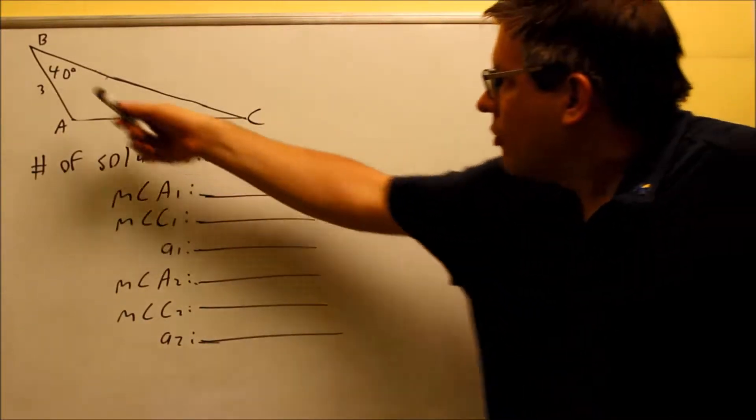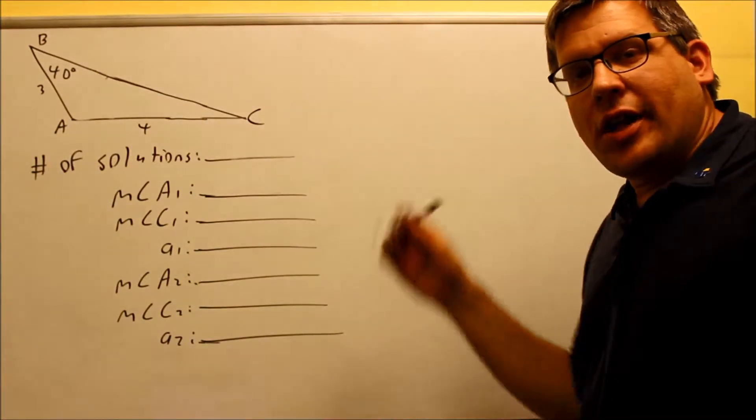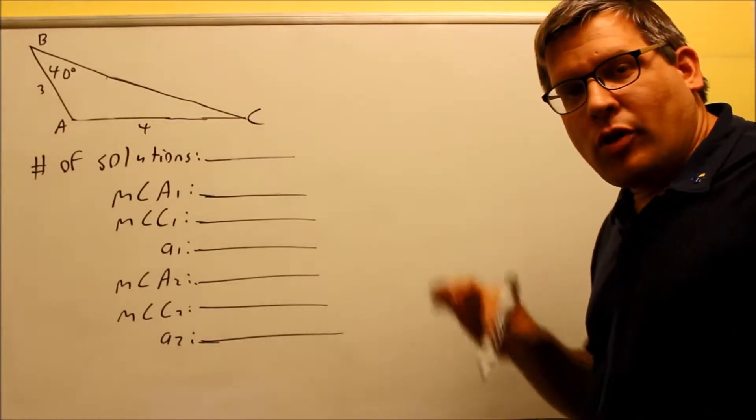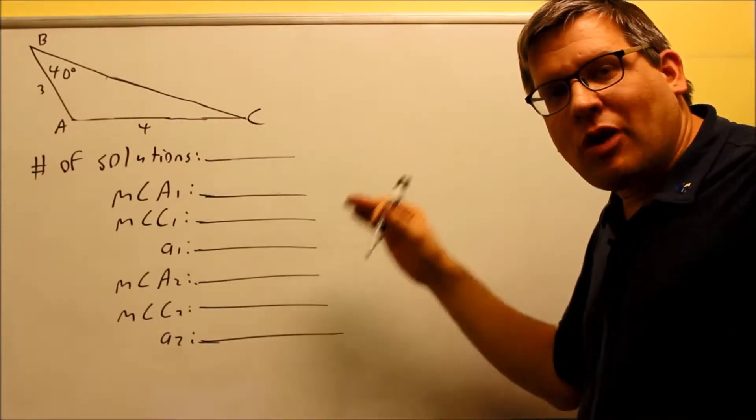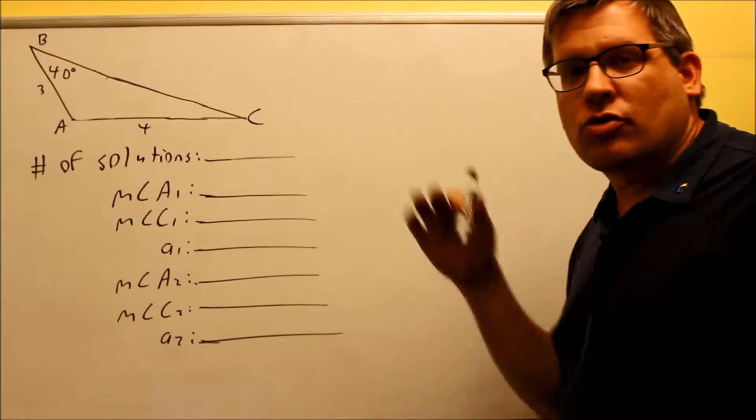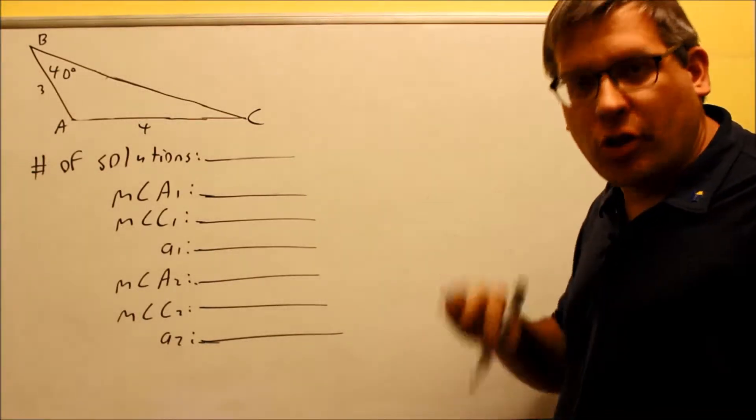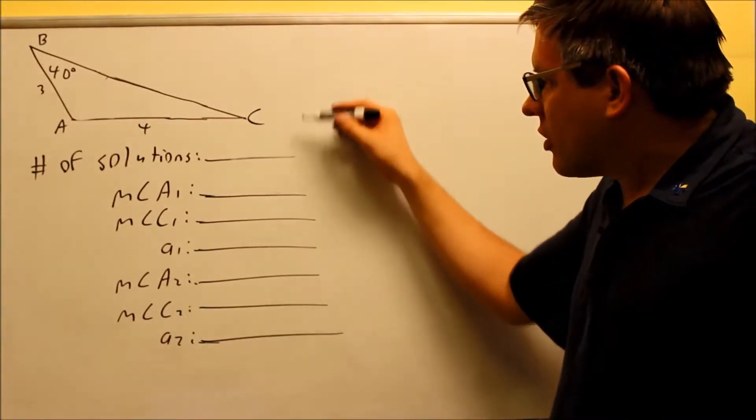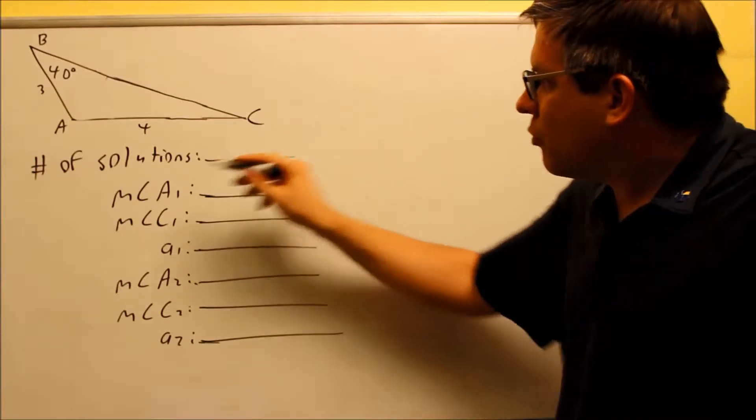Okay, we're going to do another problem where we have two sides and a given angle. In the previous video, I went ahead and showed how it's possible to have more than one solution. We also showed in the previous video how you could have no solutions. So we want to check this out now and do this particular problem.